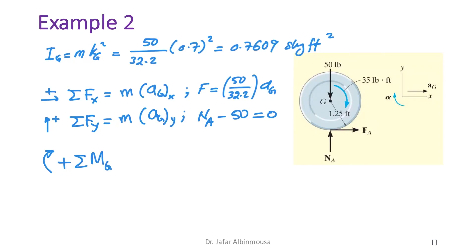The third equation sums moments clockwise as positive about G: sum of moments about G = I_G·α.